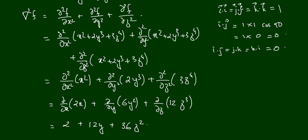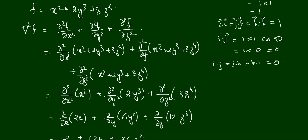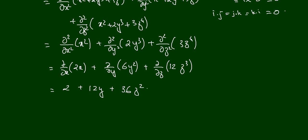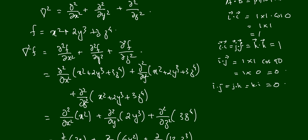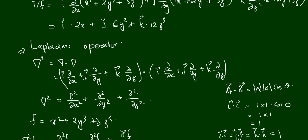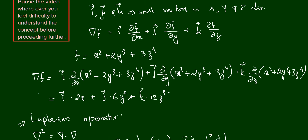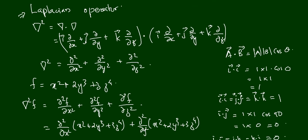The result 2 + 12y + 36z² is a scalar quantity. So del squared acted upon a scalar function and gave a scalar function only. This confirms that del squared, the Laplacian operator, is a scalar operator.